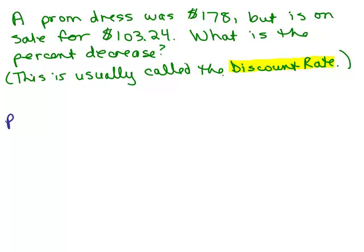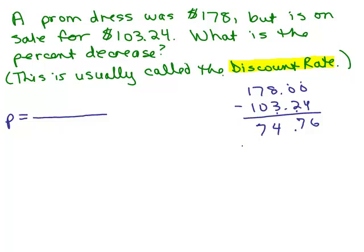Again, we're looking for the percent decrease. So we have to know how much it decreased. It was $178. And now it's $103.24. So I have to subtract. That's 76, that is 4. Looks like it went down $74.76. And in the denominator is the original price. It was originally $178.